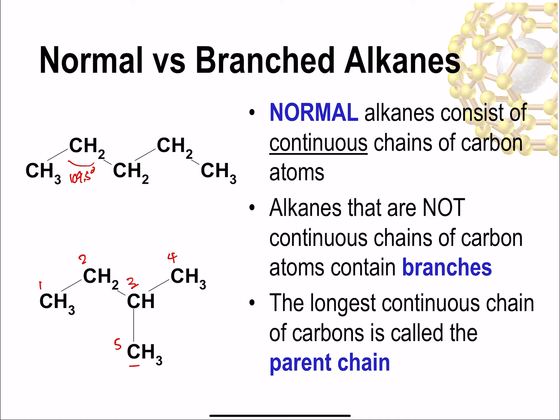You might be able to label the parent chain in more than one way. Instead of numbering one, two, three, four going one direction, you could number it going the other direction and the fifth carbon would still be a branch. So there may be more than one way to identify the parent chain, but it's always the longest continuous chain of carbon atoms in the molecule. The purple circles highlight the parent chain and the green circle highlights the branch.